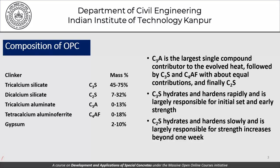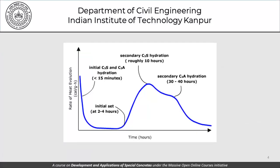C3S hydrates and hardens rapidly and is largely responsible for the initial set and early strength. C2S on the other hand hardens slowly and is largely responsible for the strength increase beyond one week. These are things we know from our background in cement hydration. Moving forward, this picture shows the rate of heat evolution over a period of time after cement has been brought in contact with water.